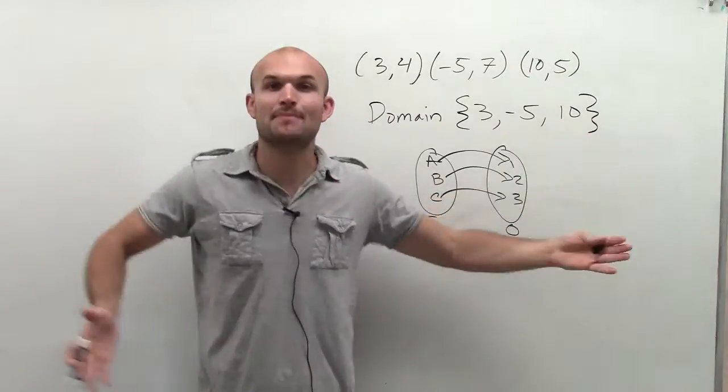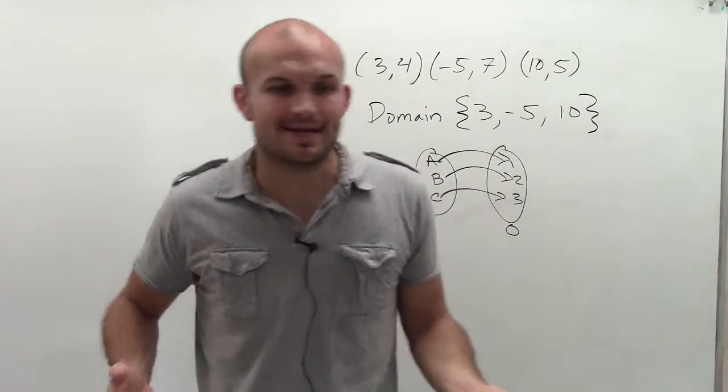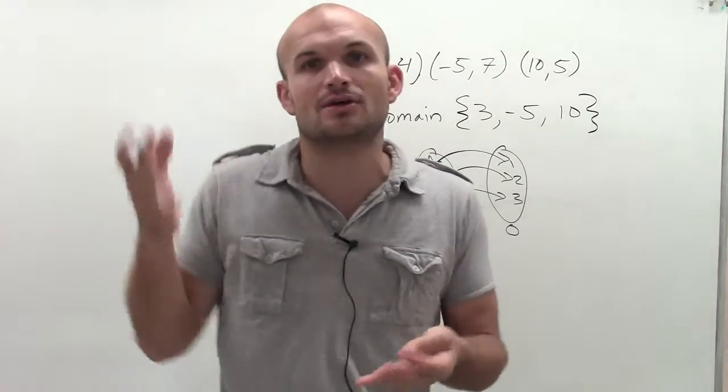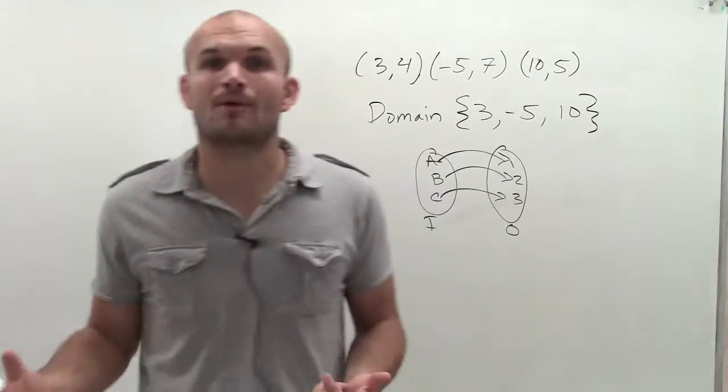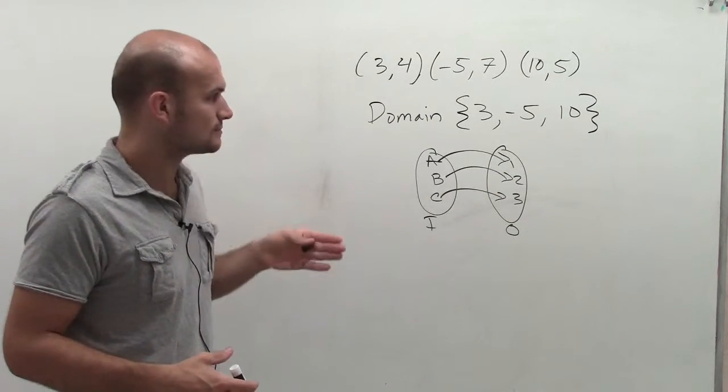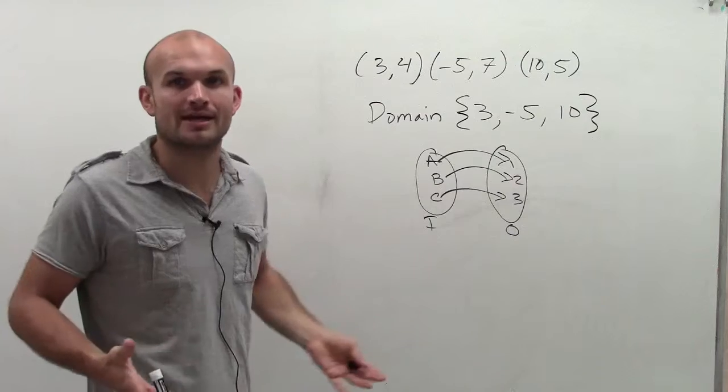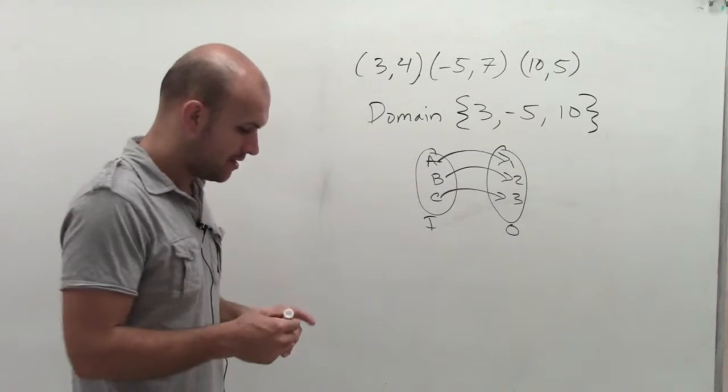Same thing if I made a table. It's going to be all the x-coordinates. If I made a graph, it's going to be all the x-values of every single x-coordinate that's on the graph. So, your domain is going to be all the x-values of a relation.